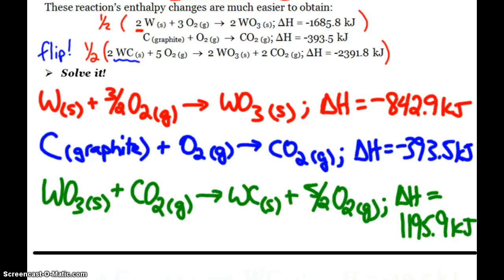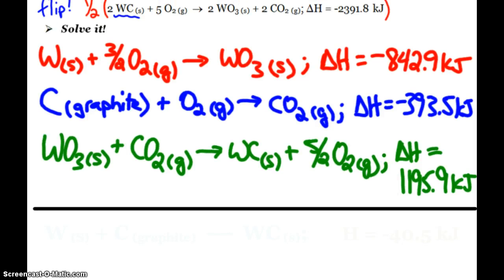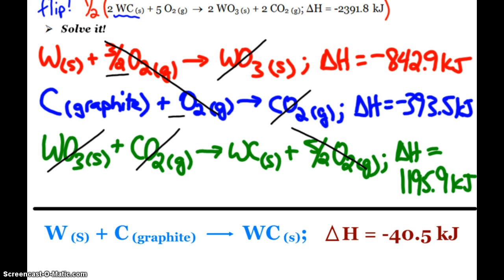And the third reaction, I flipped, so my delta H is positive, and it's also cut in half. And when I add these reactions up, the WO3 cancels out, the carbon dioxide cancels out, and I've got 3 halves plus 2 halves, so that's 5 halves oxygen. That cancels out. So I end up simply with my tungsten plus graphite, making tungsten carbide with a delta H of negative 40.5.